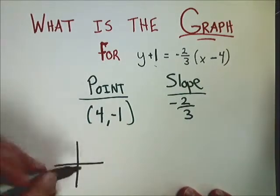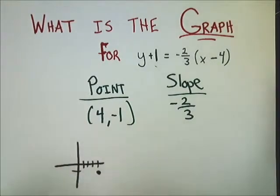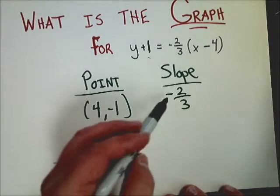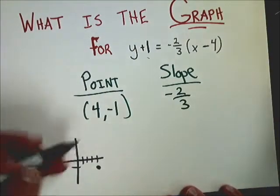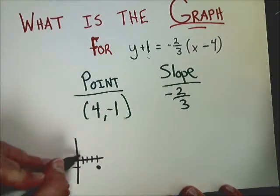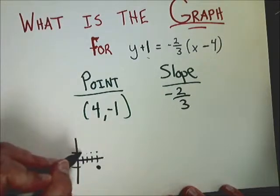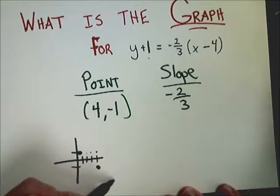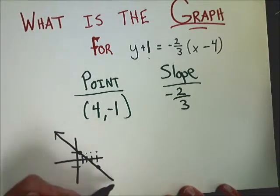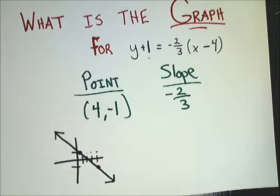Now it's easy to graph more or less. I need to find the point 4, negative 1. So 1, 2, 3, 4. And then down negative 1. Make the dot. From here, I can do the slope. Negative 2 over 3. Usually I'll go down 2 and right 3. But say I'm kind of running out of paper. I'm going to do the opposite. I'm going to go up 2, left 3. Up 1, 2, over 1, 2, 3. Make a big dot there. Connect the dots. And that's it. That's all I really need to do there. Just find the point and then go the slope from there.